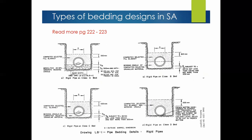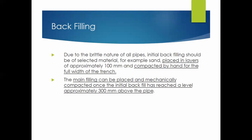There are different types of bedding designs in South Africa — just understand that different bedding types exist. For backfilling — pouring soil back after laying your pipe — it should be placed in layers and compacted by hand for the full width of the trench to protect the pipe. The main filling can be mechanically compacted once the initial backfill has reached approximately 300 millimeters above the pipe, at which point the pipe can no longer be broken.